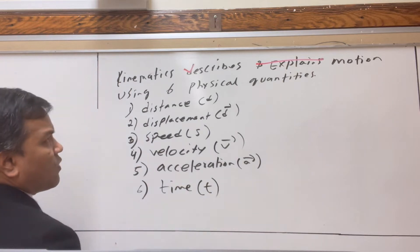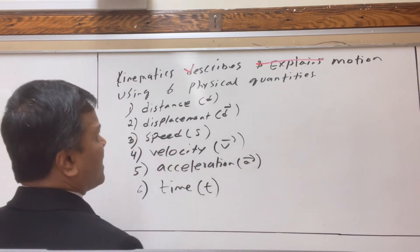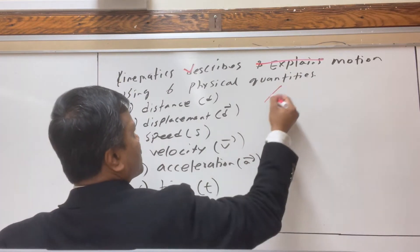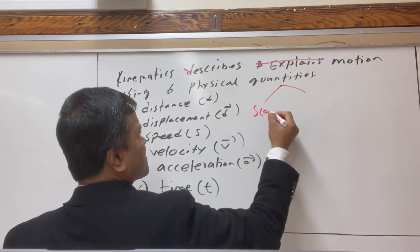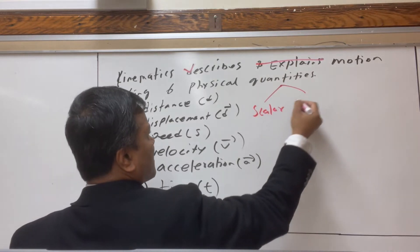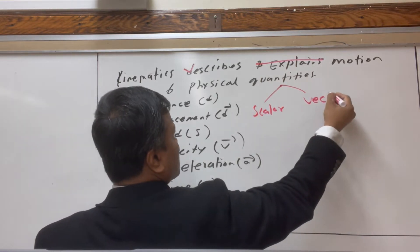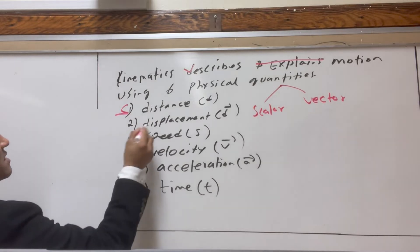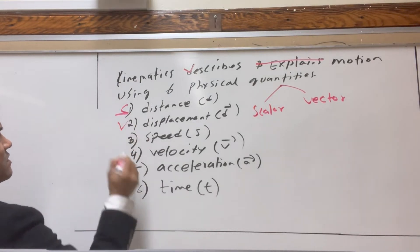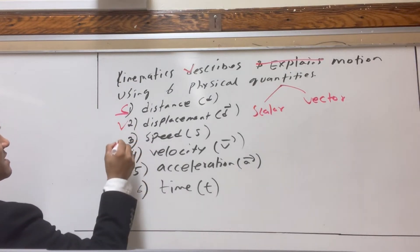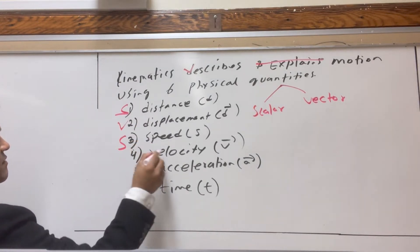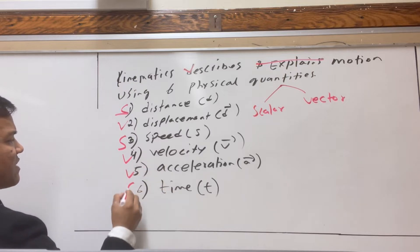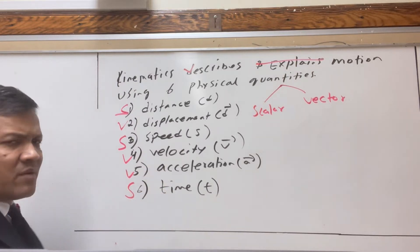So now we divide physical quantities into two types: scalar and vector. Distance is scalar, displacement is a vector, speed is a scalar, velocity is a vector, acceleration is a vector, and time is a scalar.